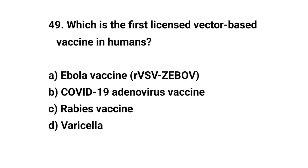Question number 49. Which is the first licensed vector-based vaccine in humans? The right answer is A: Ebola vaccine.